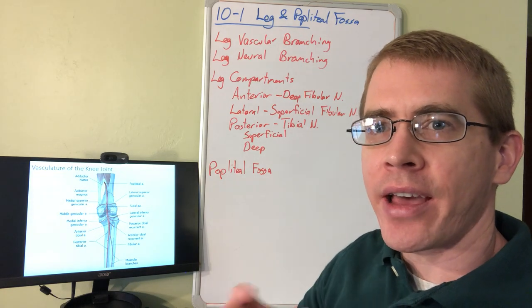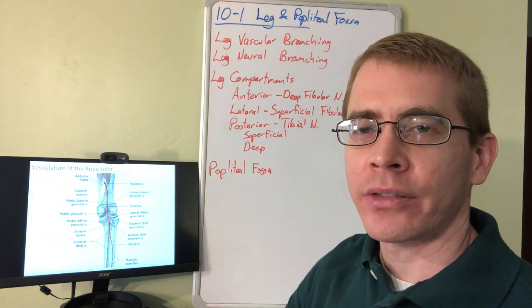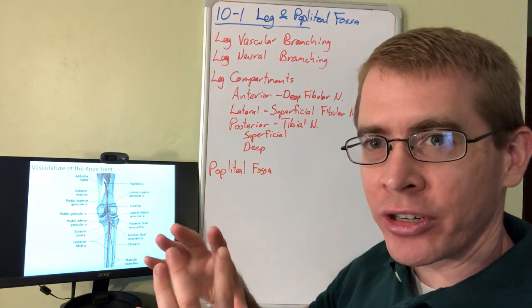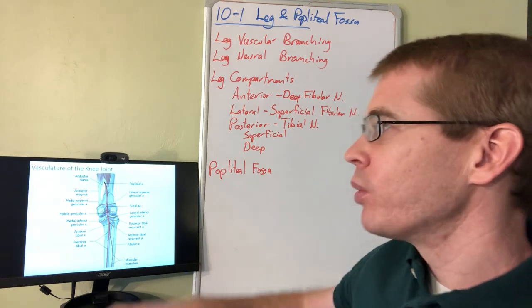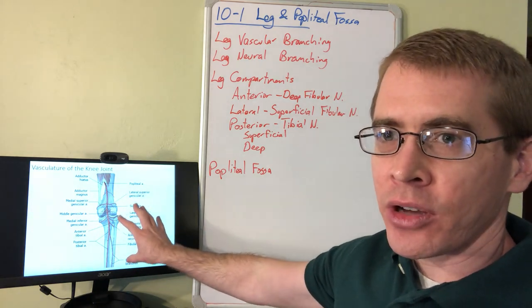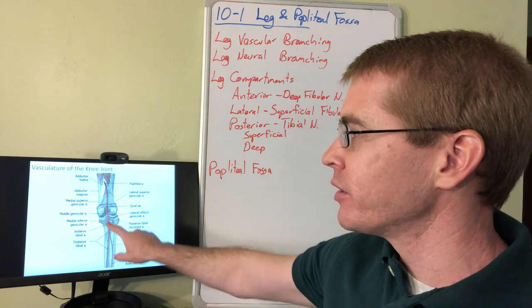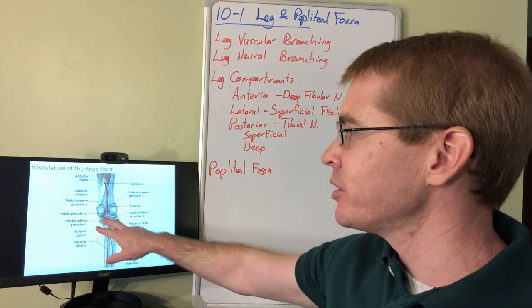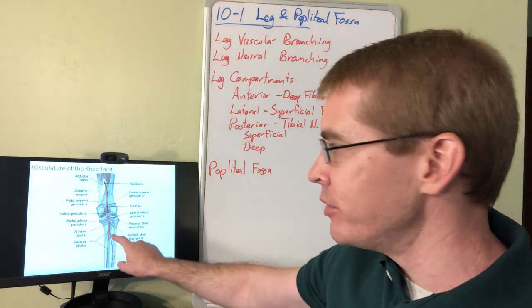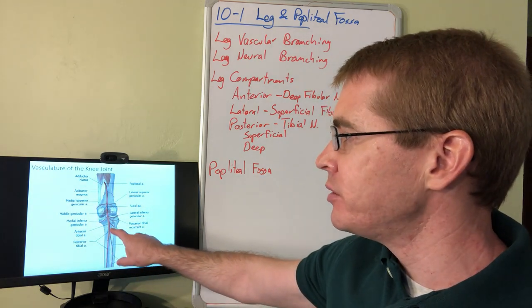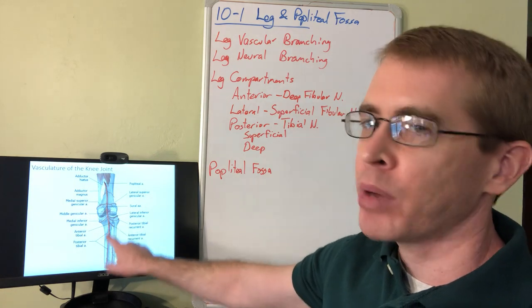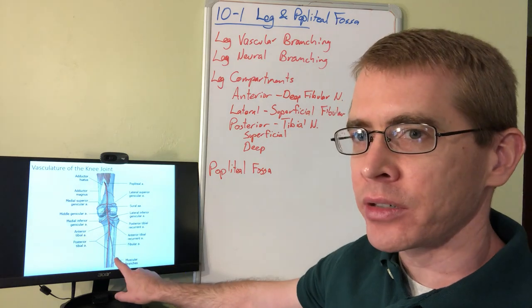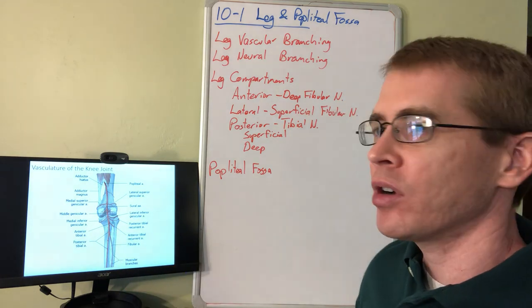We're going to do the second half of the 10-1 lecture covering the leg and the popliteal fossa — the posterior portion of the knee joint. We left off with the slide talking about the arterial vascular supply of the popliteal fossa and going into the leg. The tibial artery branches into an anterior and posterior tibial artery, with the fibular artery branching off the posterior tibial artery.